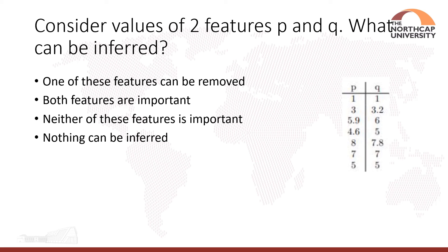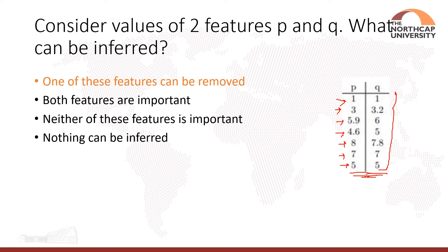The next question considers values of two features P and Q: (1,1), (3,3), (3.2, 5.96 → ~3), (4.6, 5 → ~5), (8, 7.8), (7, 7), (5, 5). Looking at the data, these two features encode similar information — they are highly correlated. For example: 1&1, 5&5, 7&7. So the correct inference is that one of these features can be removed.